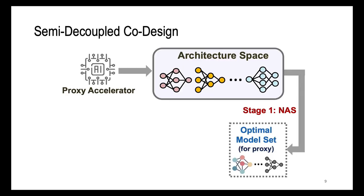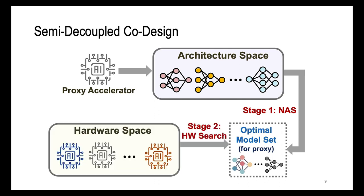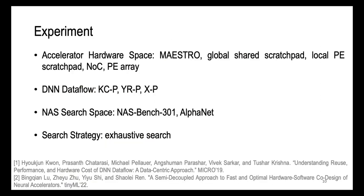To summarize, our semi-decoupled approach has two stages. In stage 1, we randomly choose a proxy accelerator and run hardware-aware NAS k times to find a set of optimal architectures. In stage 2, we search for the optimal accelerator as introduced. Our semi-decoupled approach partially decouples architecture from hardware search, reducing total cost from order m times n to order k times n plus m, where k is orders of magnitude less than m and n.